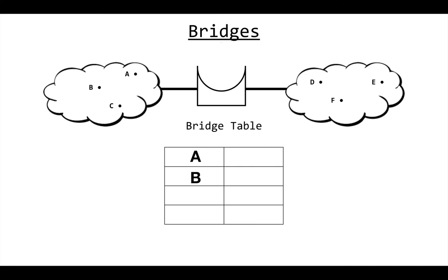If device F is going to send a packet to device D, D will see it and say 'hey it's for me, I'm going to process that packet.' E will see it and say 'hey it's not for me, I'm going to ignore it.' The bridge will see it and say 'I do not know where D is yet, so I'm going to have to retransmit this out my left side.' A, B, and C will all see the packet and say 'hey it's not for me, I'm going to ignore it.'